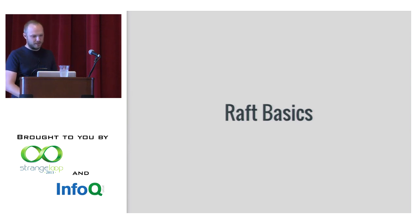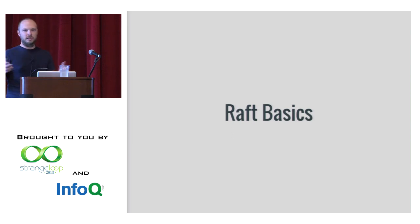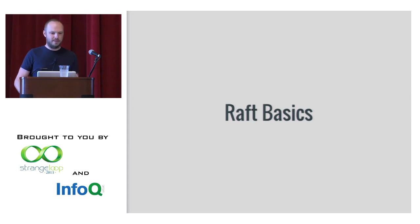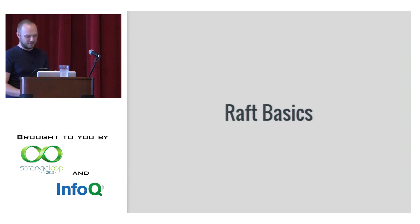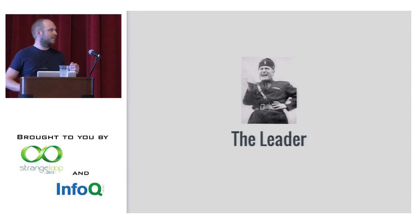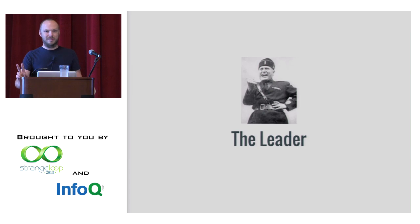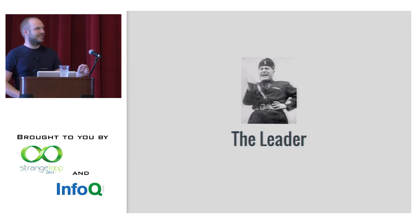So now I'm actually talking about Raft itself. Paxos was based on a theoretical Greek island with a parliamentary system. When I think about Raft, I think of a democratically elected dictatorship — that's the sense of government you can think about. There are three different roles in Raft: you have the leader. That's a little aside — if you're ever looking up democratically elected dictatorships, you get basically Mussolini and Hitler, and you don't want to put Hitler on a slide, so that is Mussolini.